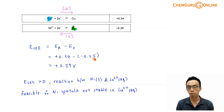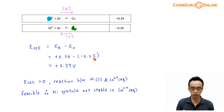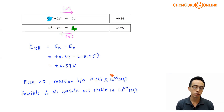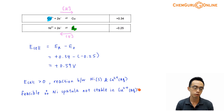A positive E°cell tells us the reaction is feasible. If E°cell is positive, the redox reaction is feasible and spontaneous under standard conditions. If E°cell is negative, the reaction is not feasible and we do not observe it. Since our E°cell is +0.59 V, the reaction between nickel metal and copper(II) ions is feasible. Therefore, the nickel spatula is not stable in copper(II) sulfate solution, and we should not use it to stir that solution.